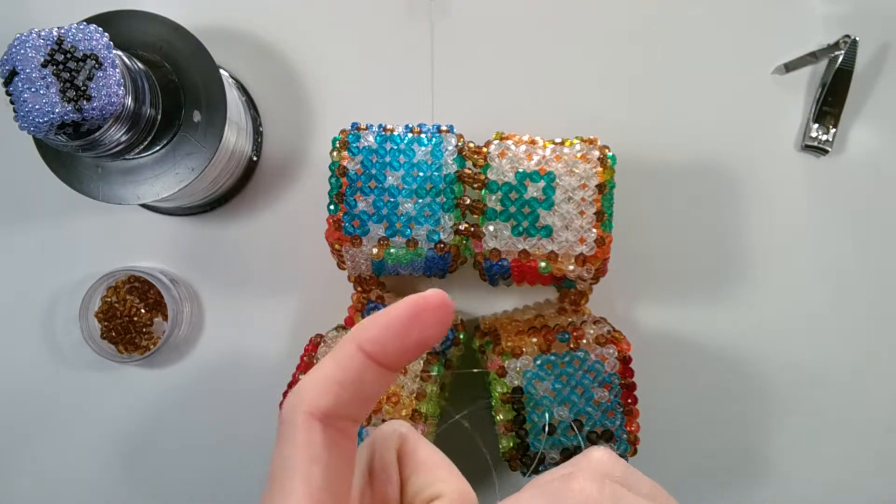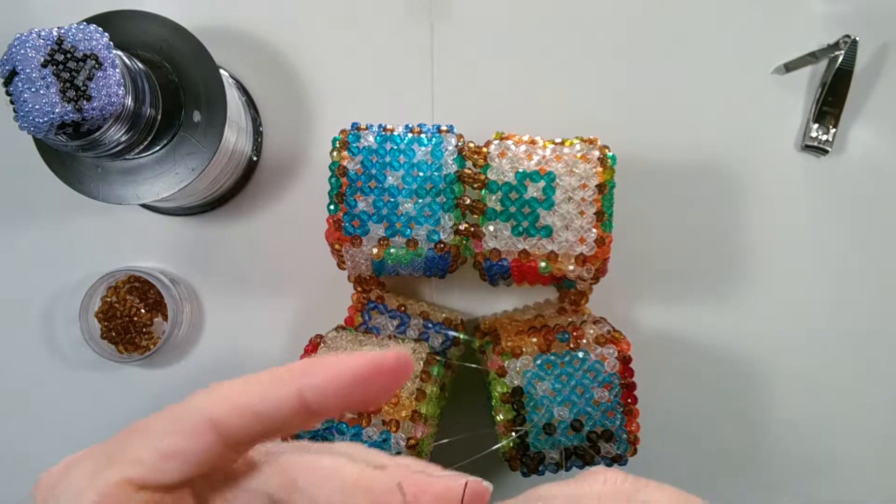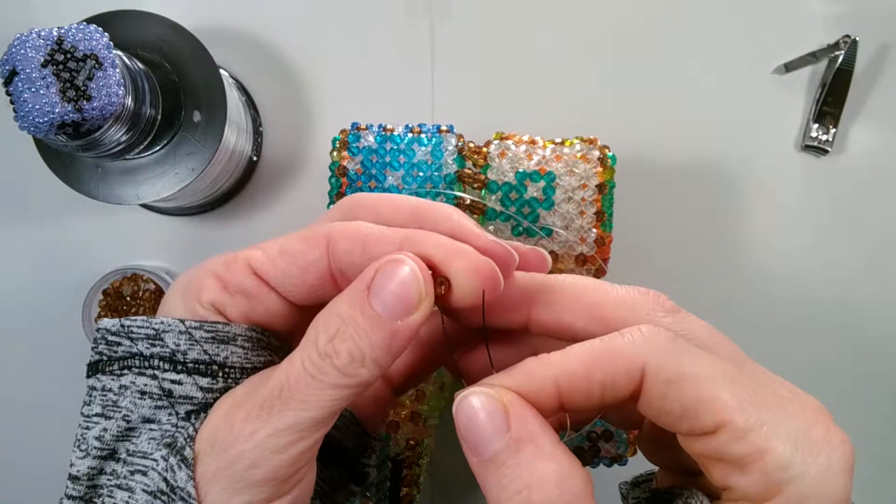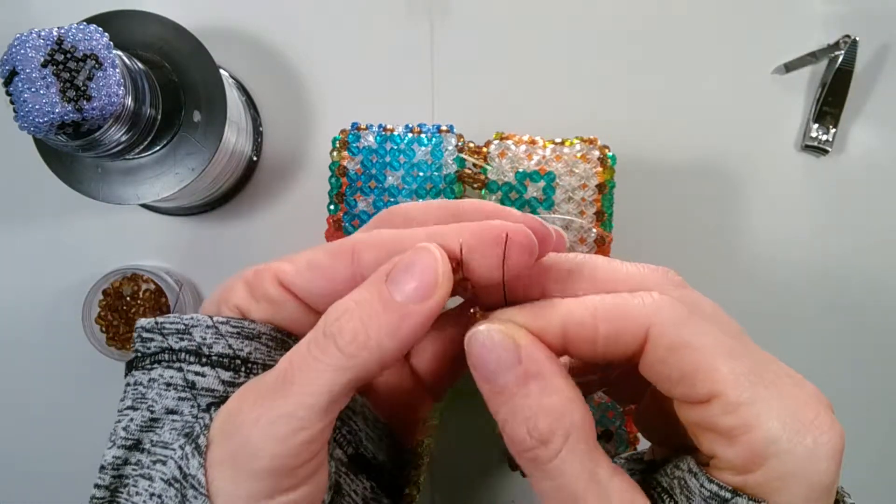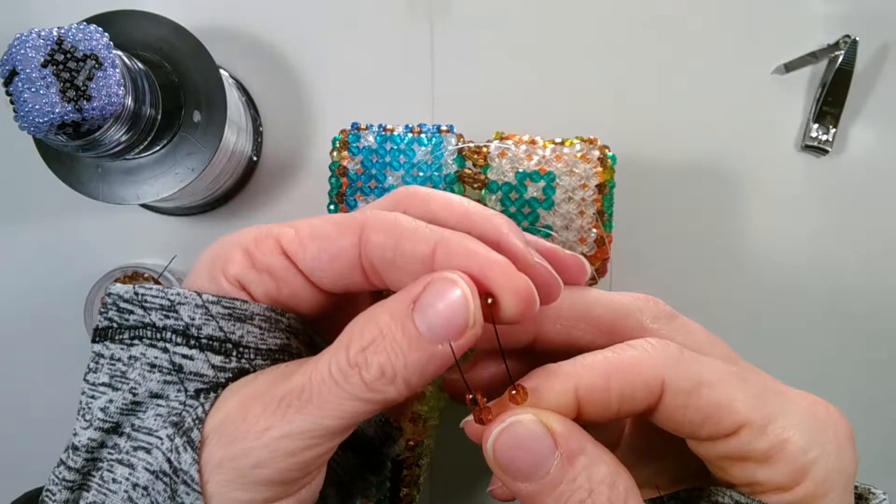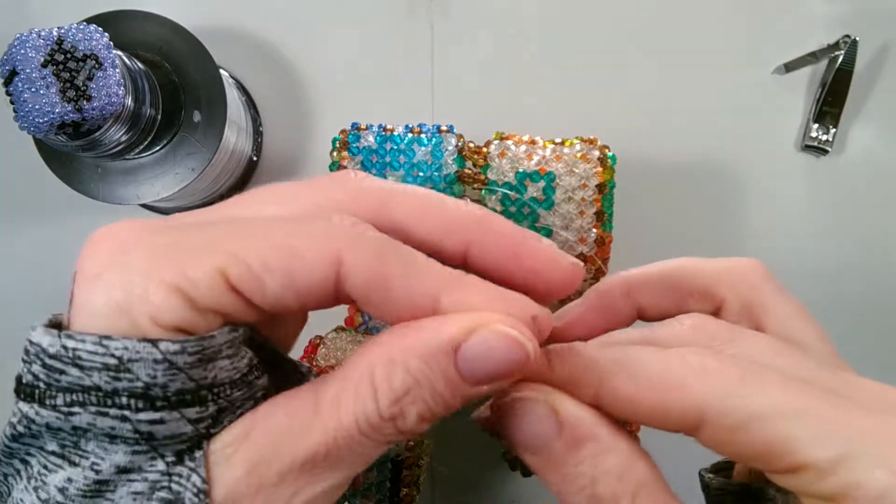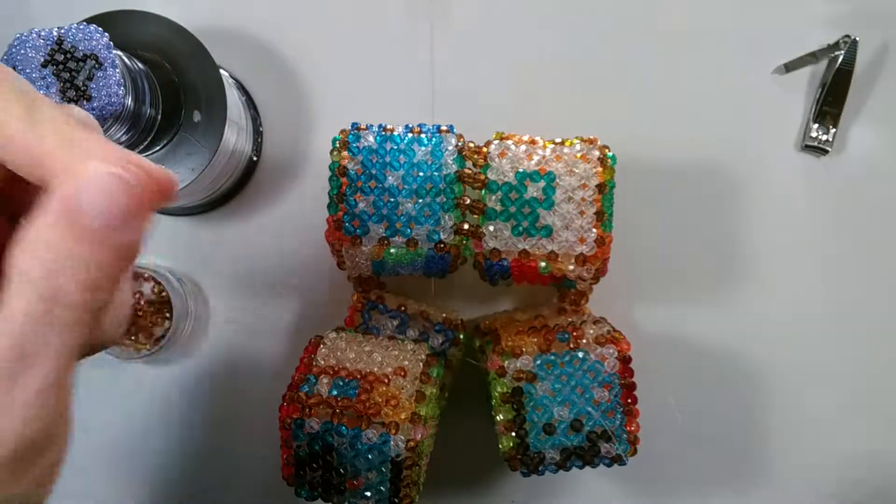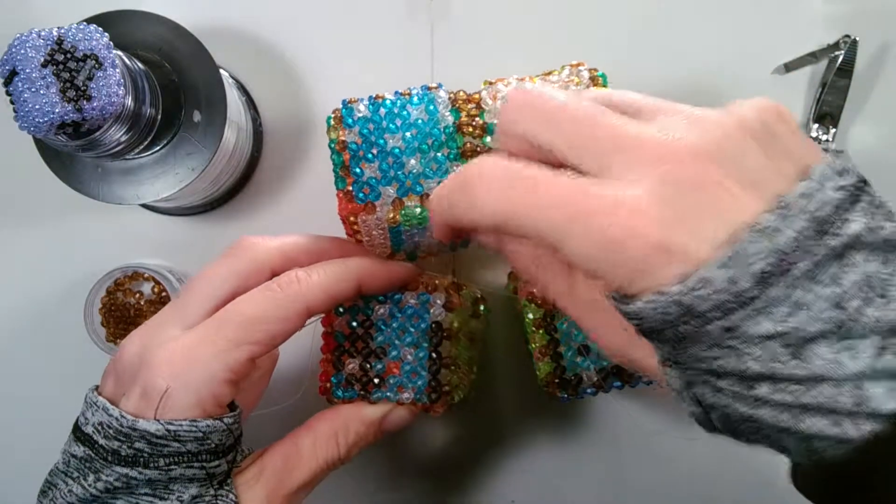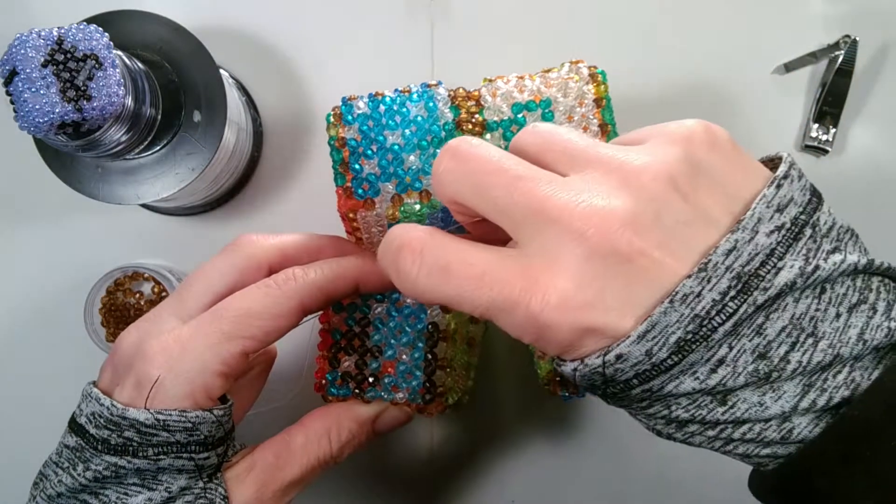Then we'll add two beads to each string. This time I'll try not to get my strings crossed and we will go through the first one on the opposite cube.